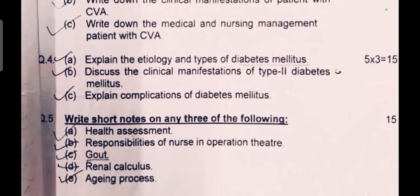Question number four: (a) Explain the etiology and types of diabetes mellitus — 5 marks. (b) Discuss clinical manifestations of type 2 diabetes mellitus. (c) Explain complications of diabetes mellitus. Total 15 marks. Question number five: Write short notes on any three of the following — health assessment, rehabilitation, nurse in operation theater, renal calculus, and nursing process — 5 marks each, total 15 marks.